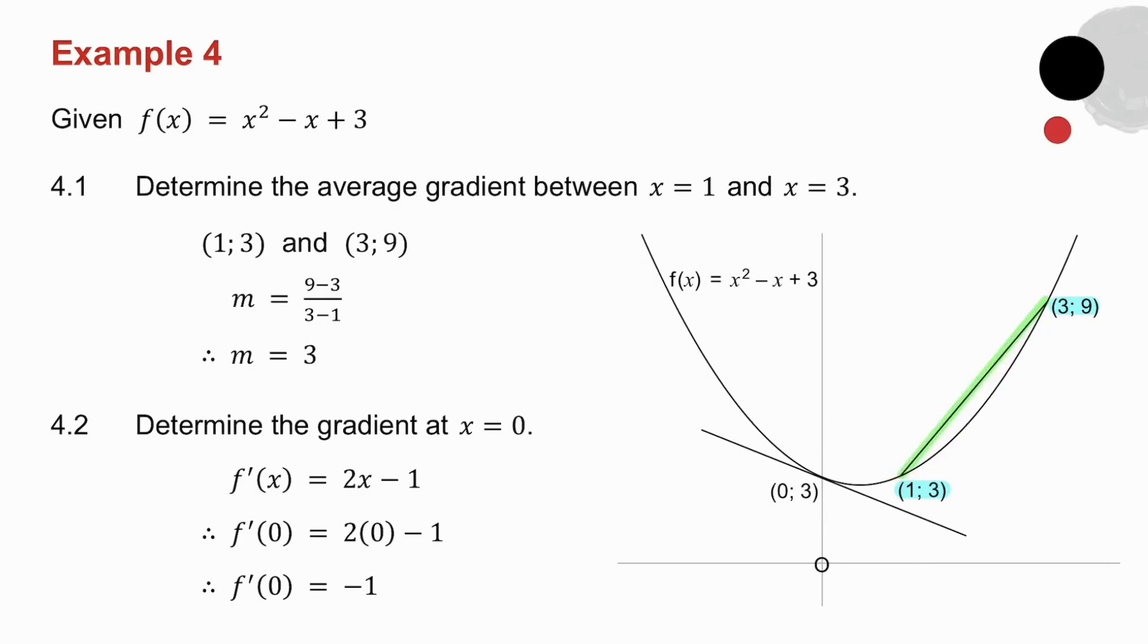The second question, I ask you to determine the gradient at the point x equals 0. Now I can't use my gradient formula because I don't have two points. So I'm wanting the gradient of the tangent at x equals 0. And to find the gradient at a point, I need the derivative.